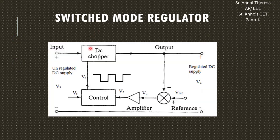In this switched mode regulator, the input is unregulated DC supply and the output is regulated DC supply. It mainly has two circuits: the first one is the DC chopper circuit and another one is the control circuit. The DC chopper circuit consists of power semiconductor devices like power BJT, MOSFET, and IGBT — any one of these devices can be used in the DC chopper.